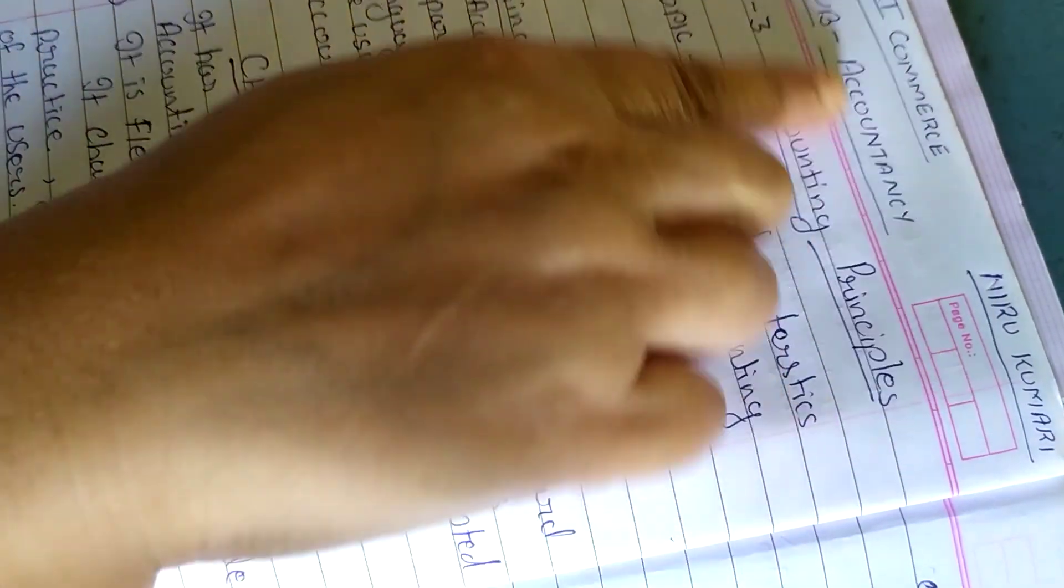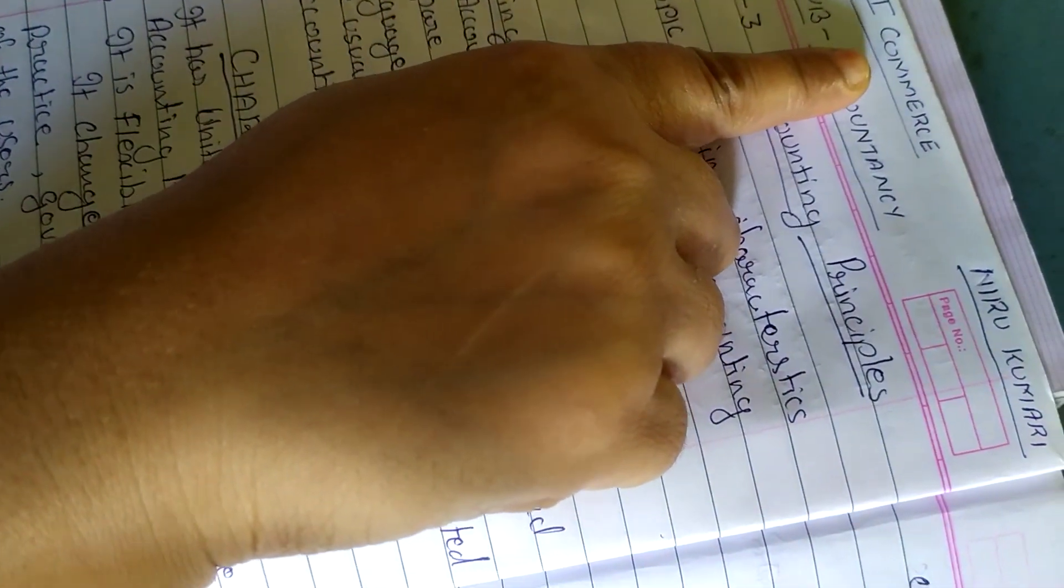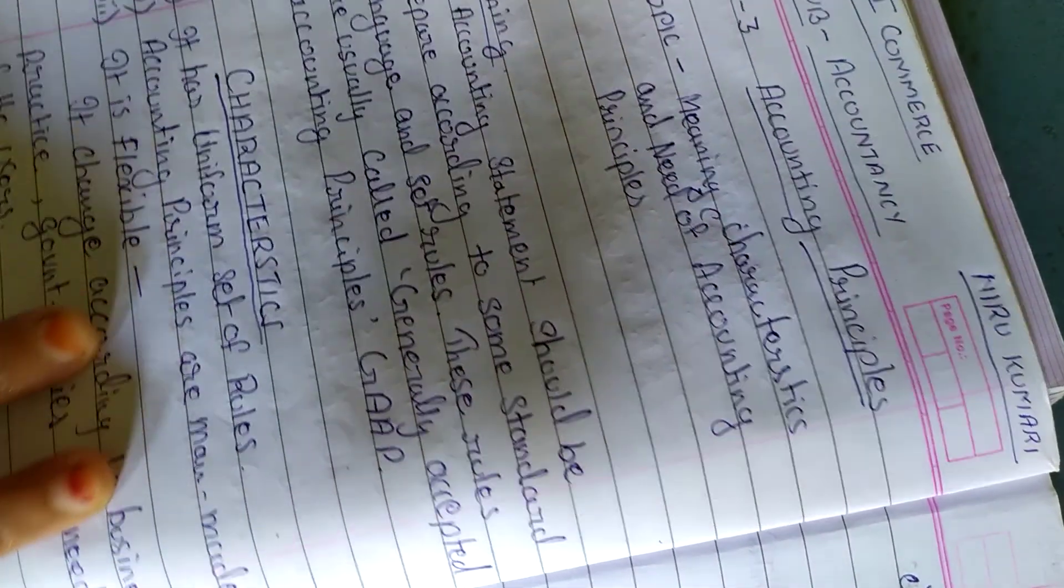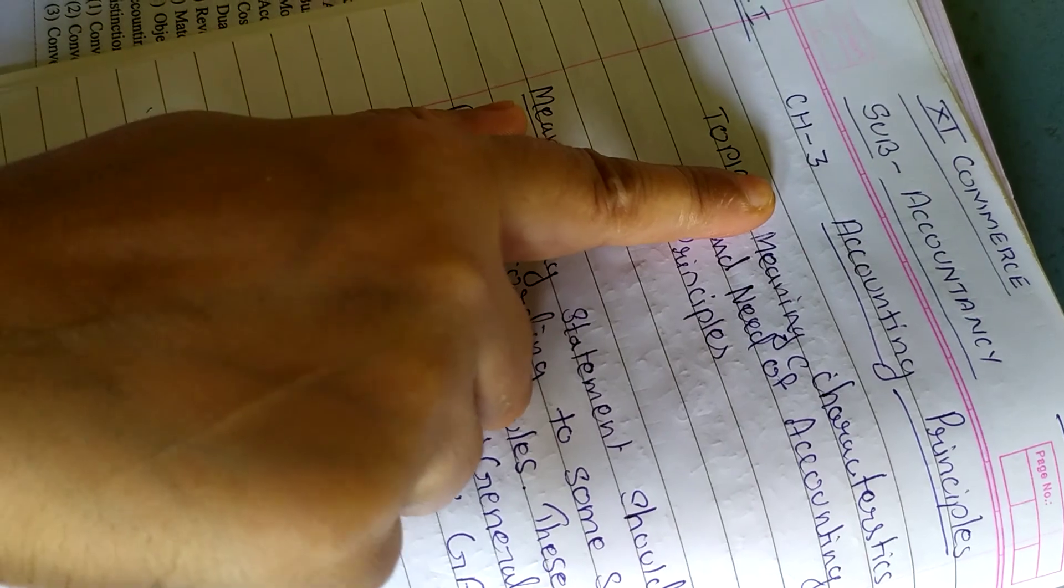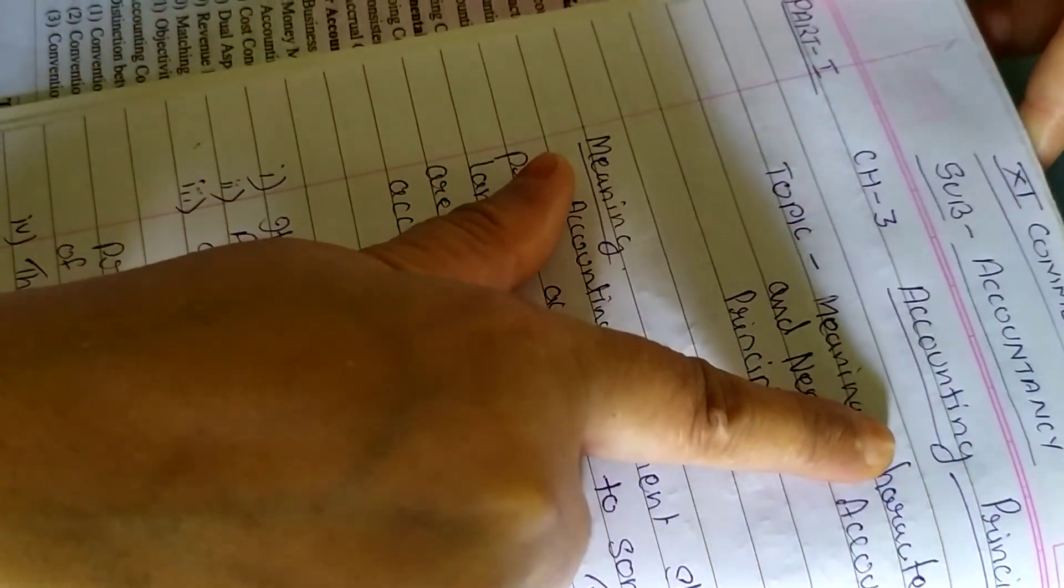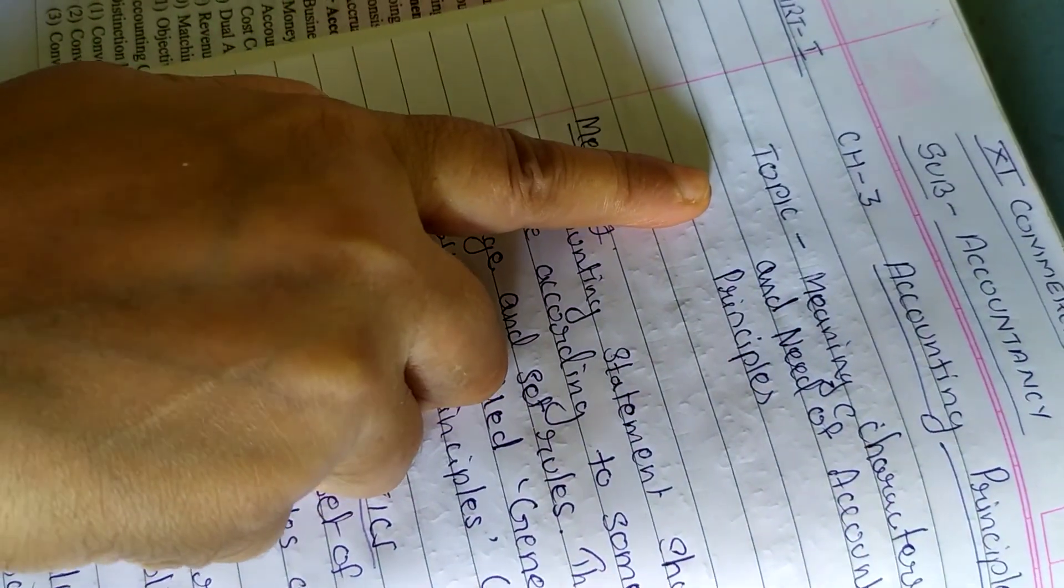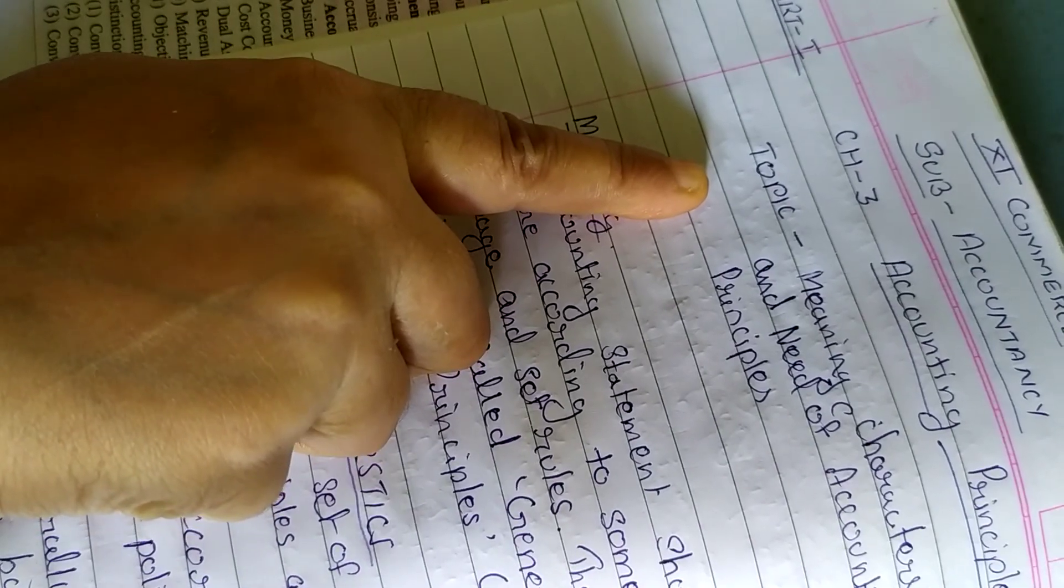Myself Neeru Kumari, welcome to 11th Commerce Accountancy Classes. It's part 1 of chapter 3, that is Accounting Principle. The topic that we cover today is the meaning, characteristics and needs of accounting principle.